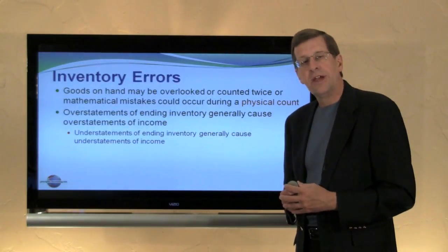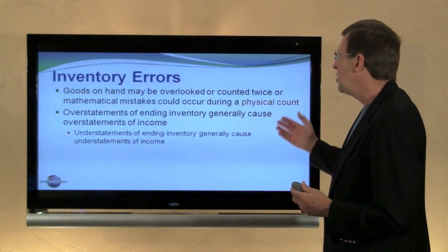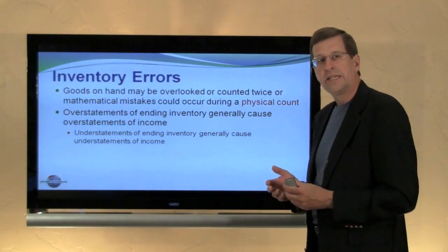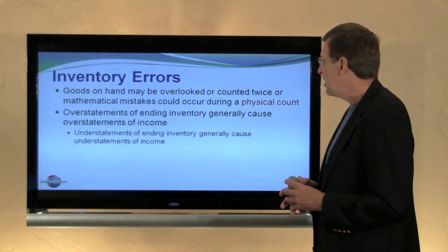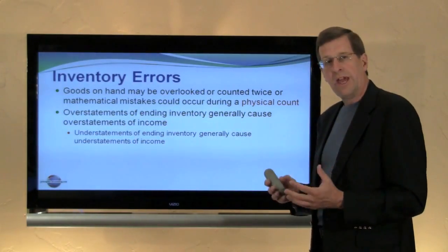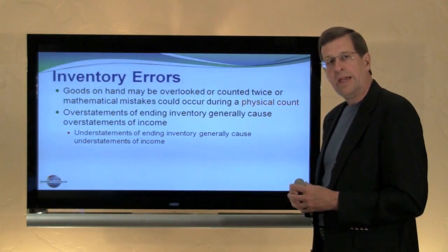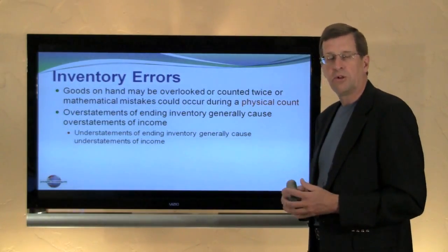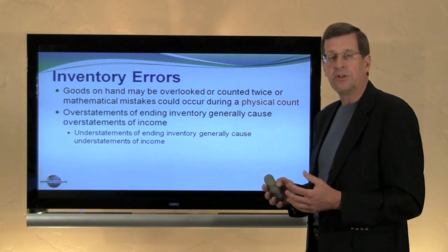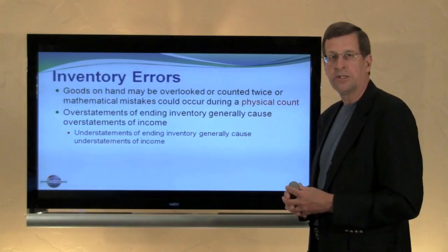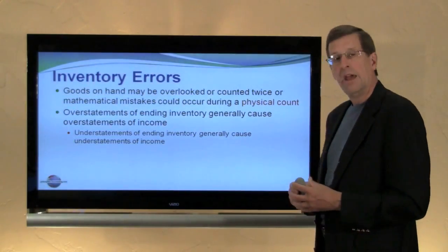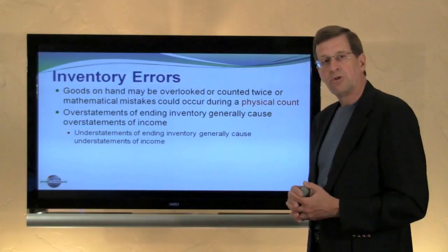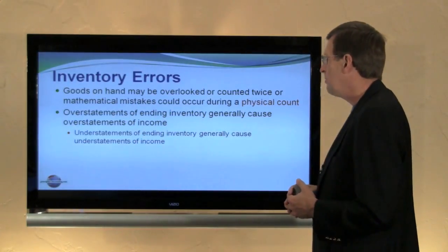Let's next turn our attention to inventory errors. Goods on hand might be overlooked, counted twice, or other mathematical mistakes might occur during a physical count of inventory. At least annually, a company should take a physical count of inventory and make sure that what they believe they have on hand by reference to their accounting records is in fact what they have on hand. But in the process of counting, if errors occur, those errors will become very significant in determining profitability.